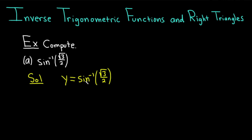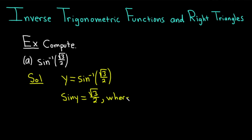We can use the definition of the inverse function. Sine inverse takes the square root of 3 over 2 and sends it to y. The inverse function of this — which is just the sine function — should take y and send it back to the square root of 3 over 2, because they're inverse functions. They undo each other.